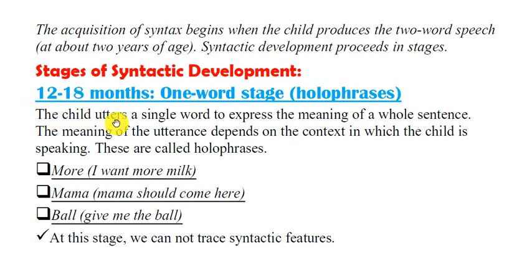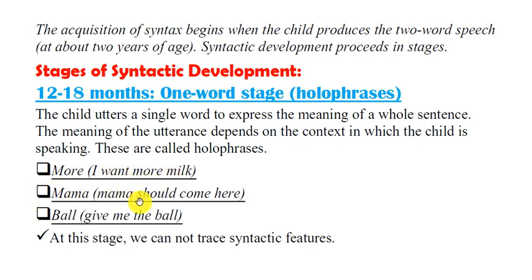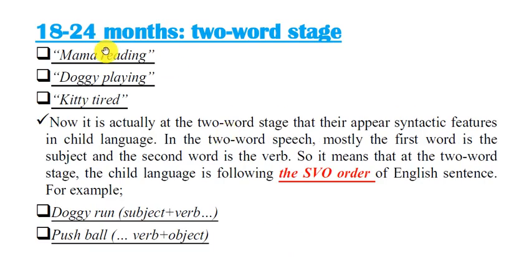In the holophrastic stage, the child utters a single word to express the meaning of a whole sentence. The meaning of the utterance depends on the context in which the child is speaking. These are called holophrases. For example: 'more' may mean 'I want more milk'; 'mama' may mean 'mama should come here'; 'ball' may mean 'give me the ball.' At this stage we cannot trace syntactic features.